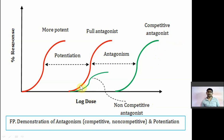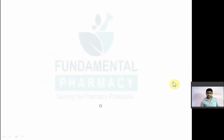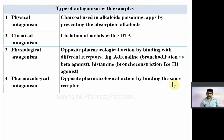Competitive antagonist and full agonist have structural similarity, whereas non-competitive antagonist does not have structural resemblance to the full agonist. That's why it shifts the dose-response curve to the right side but not parallelly.